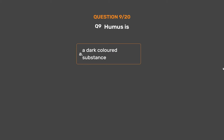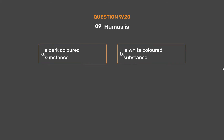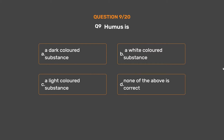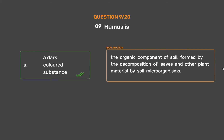Question number 9. Humus is. Option A: A dark colored substance. Option B: A white colored substance. Option C: A light colored substance. Option D: None of the above is correct. The correct answer is Option A: A dark colored substance. Humus is the organic component of soil, formed by the decomposition of leaves and other plant material by soil microorganisms.